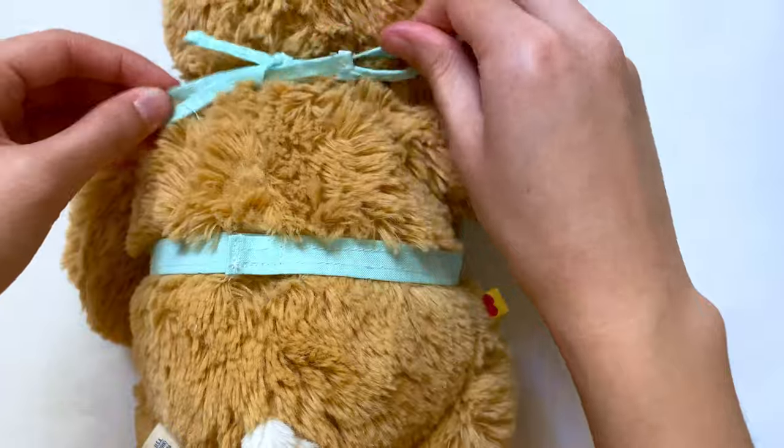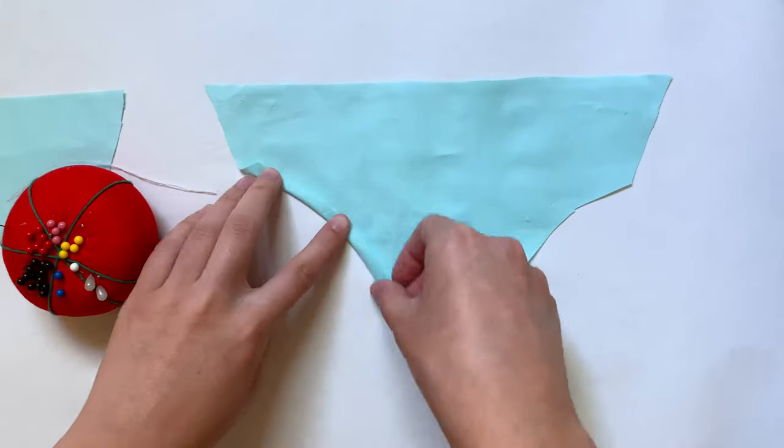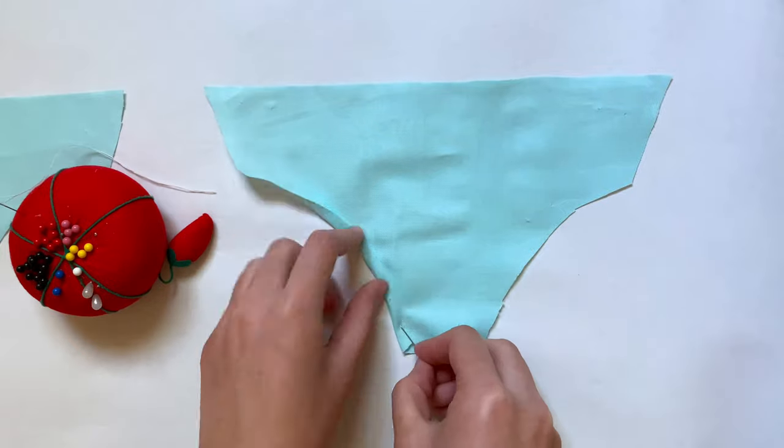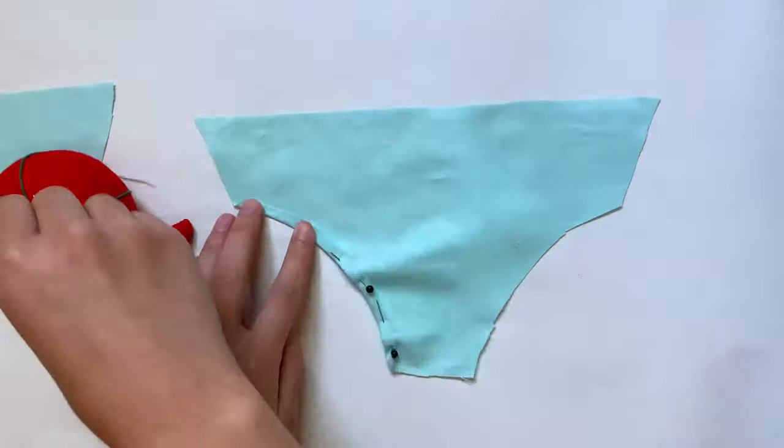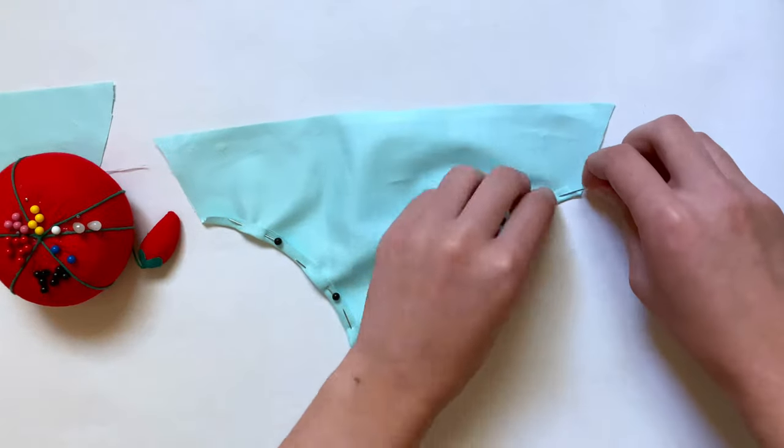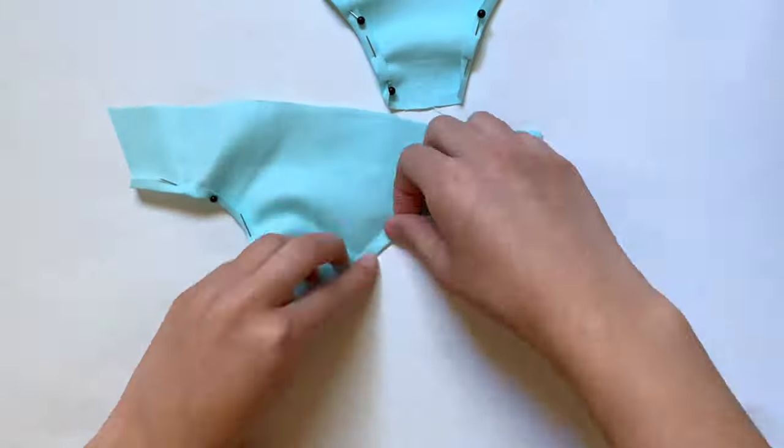Now it's time to make the bottoms. I first need to hem the curved parts of both the front and back pieces. With the bad side facing up, I'm just going to fold over that edge and pin it down. I usually have to make a few cuts when folding over curves, but with this one I didn't have to. I'm doing this to both pieces and sewing this on with a straight stitch.